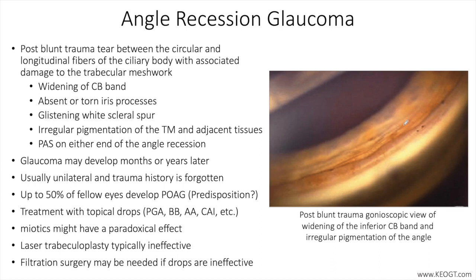You can see here on this gonioscopic view of the inferior angle the transition from what appears to be a mostly normal angle with maybe a little bit more pigmentation — you can see some pigment granules here and also over here. As you transition from right to left, you see a widening of the ciliary body band, which I'll try to represent here with the parting lines.